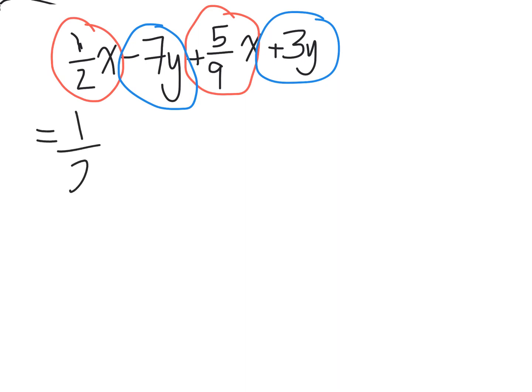So I've got 1/2 x plus 5/9 x minus 7y plus 3y.